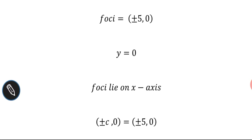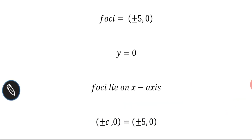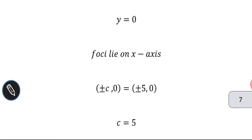For the x-axis, the coordinates of foci are plus or minus c comma 0. Given that the foci are plus or minus 5 comma 0, we equate c equal to 5.